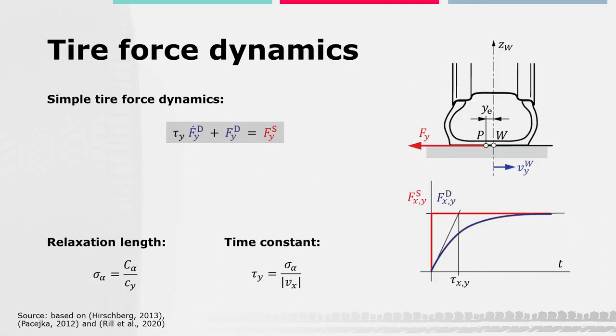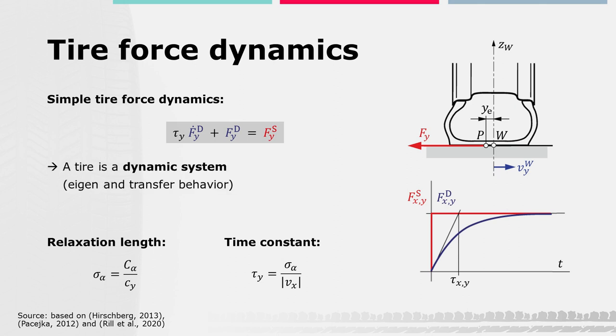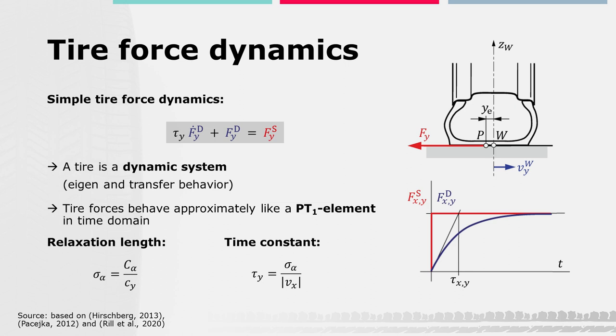There are two important conclusions based on these considerations. First, it shows that a tire is a dynamic system due to its elasticity, which means that a tire has a certain eigenfrequency as well as a transfer behavior. Second, for those who are familiar with general system dynamics, as the equation shows, tire forces act like a first-order time delay, a so-called PT1 element.